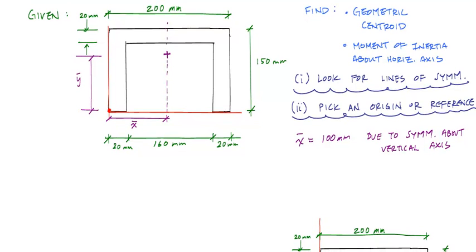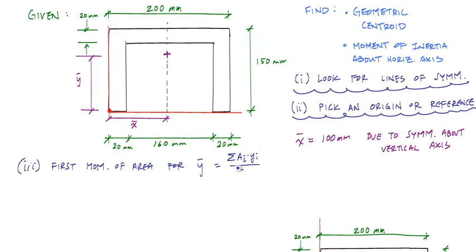The next thing we want to do is apply the first moment of area relationship to calculate y-bar. The equation is: y-bar equals the sum of Ai times Yi over the sum of Ai. This works for composite shapes — meaning shapes that can be broken up into rectangles, squares, triangles, circles — things with known moments of inertia about their own axis, or easy areas to calculate. Otherwise you'd have to use integration. Hopefully most of the time you're not designing some funky cross-sectional shape for your beam.